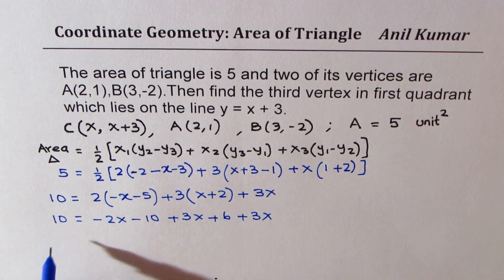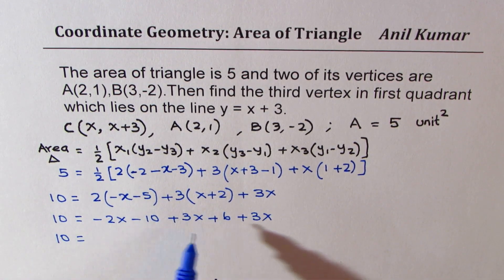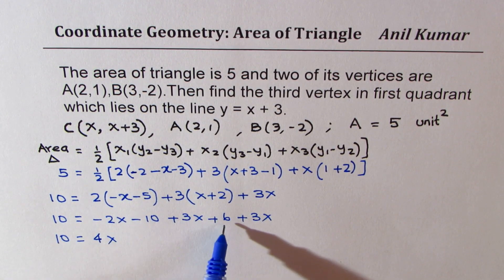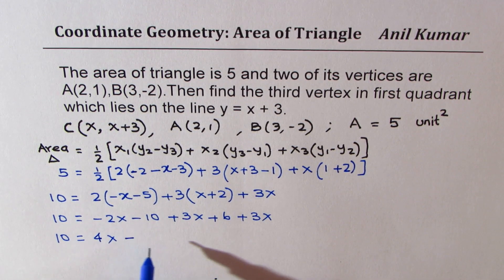Combine the like terms. 3x, 3x, 3x minus 2 is 4, so we get 4x. Numbers -10 plus 6 gives us -4.